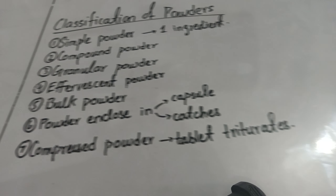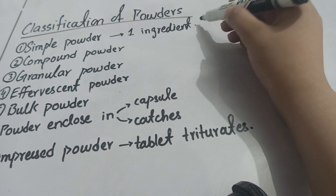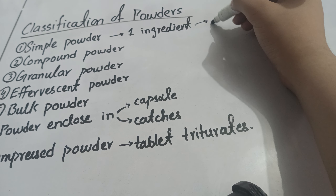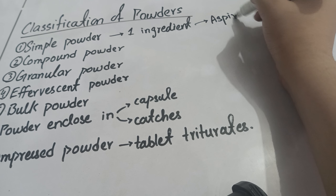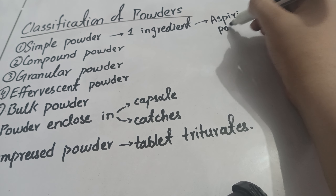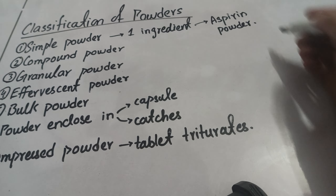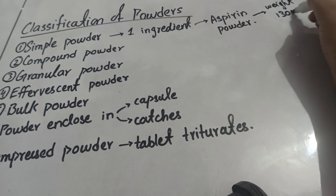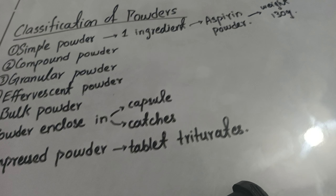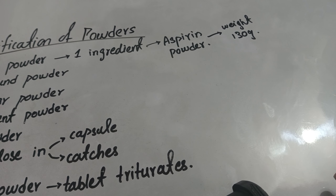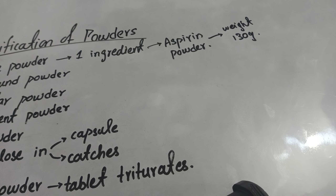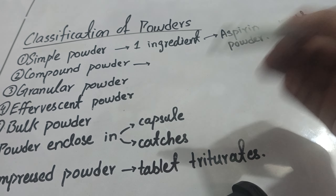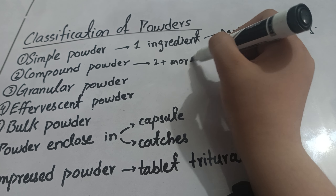To prepare a simple powder, first you weigh that particular material. Compound powder is composed of two or more ingredients.